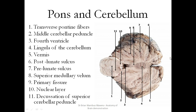Looking at another axial section, you see the pons and the cerebellum, with the vermis of the cerebellum. These white fibers in the pons are the transverse pontine fibers. Level 2 becomes the middle cerebellar peduncle, which connects the pons to the cerebellum. Then this is the fourth ventricle, and you have the lingula of the cerebellum. The prelunate and postlunate sulci are visible. Level 8 is the superior medullary velum, level 9 is the primary fissure, and then the nuclear layer. This is part of the fourth ventricle, and this is the decussation of the superior cerebellar peduncle.